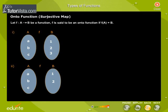A function f: A → B is called an onto function if all the elements of co-domain B are images. That is f of A is equal to B. In these examples, f is onto because all elements of B are images.